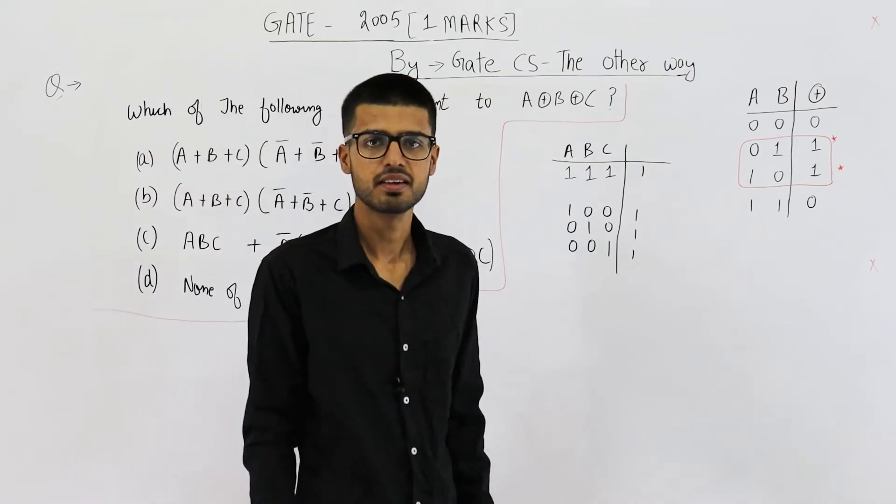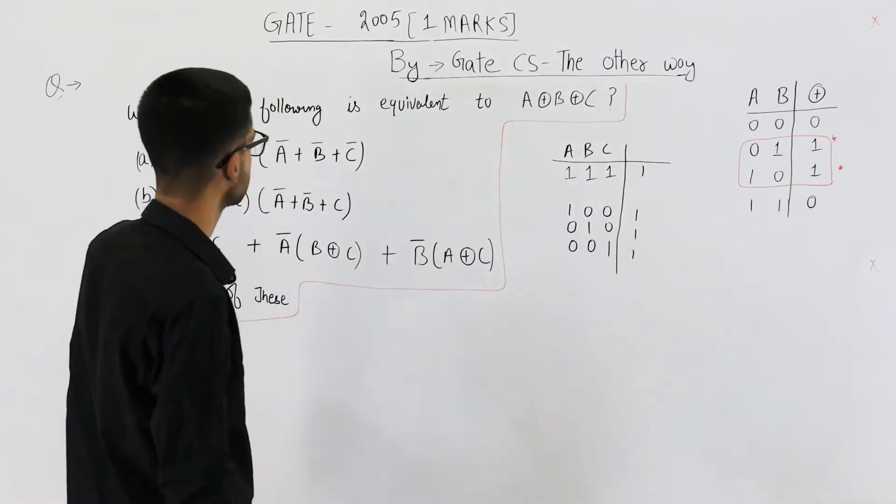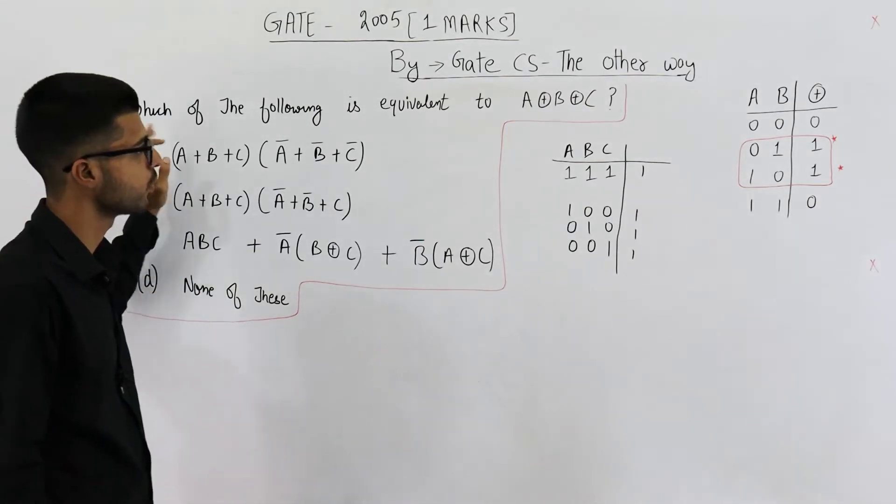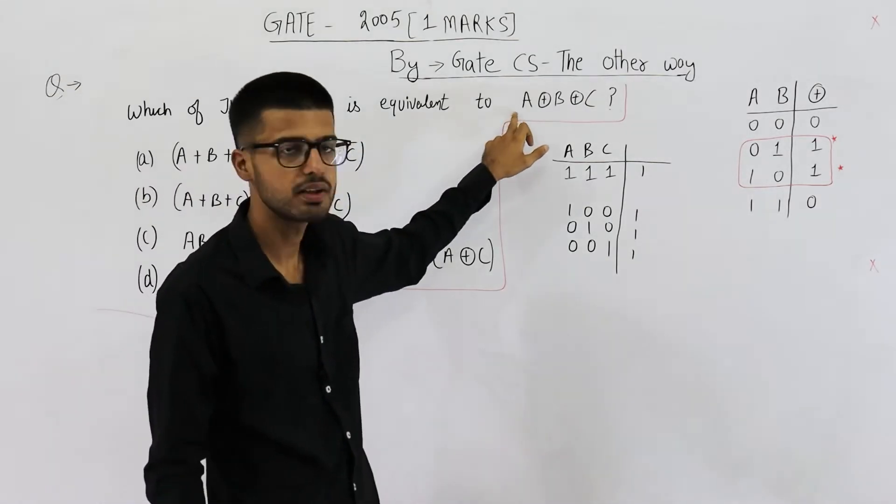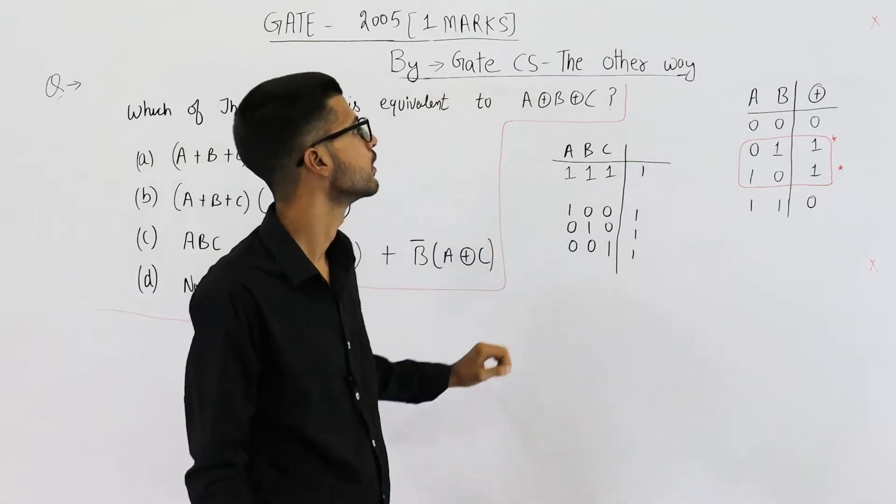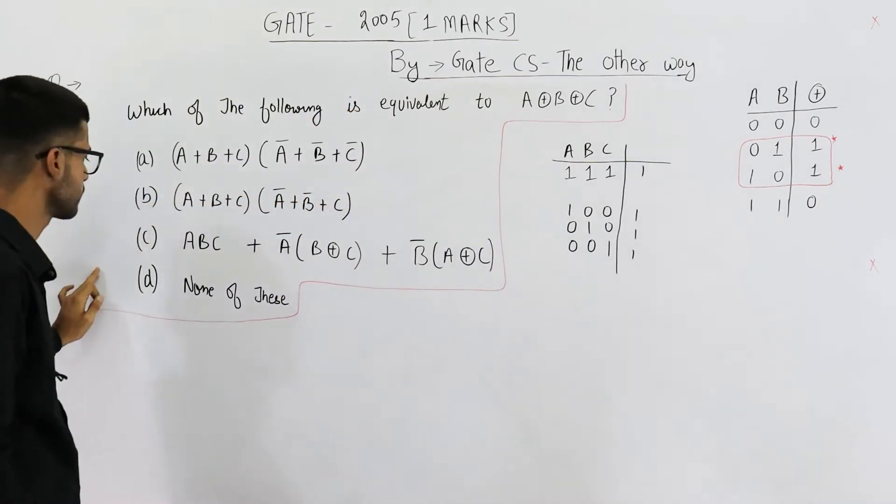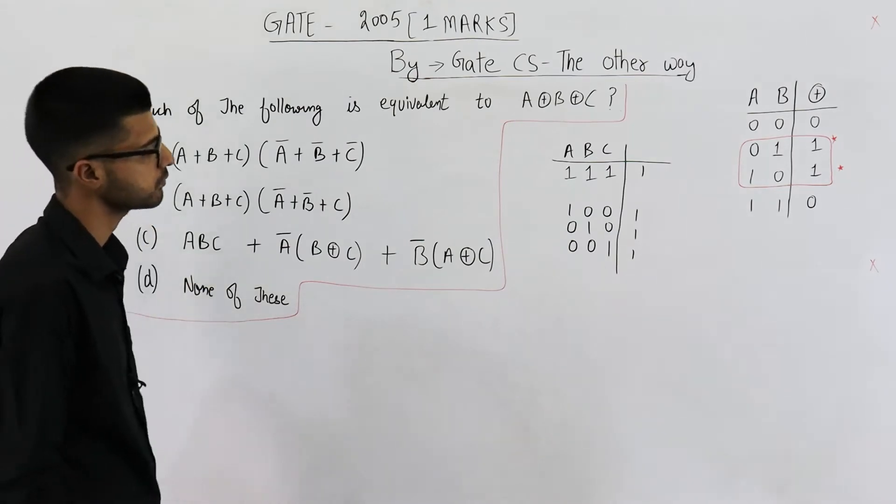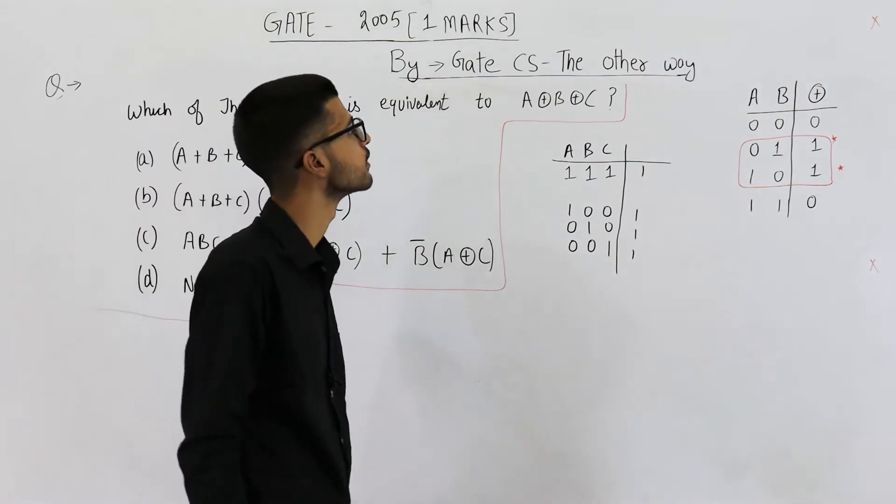Hello students, welcome back. This is a 2005 question for one mark. They are saying which of the following is equivalent to A XOR B XOR C. You have four options and you need to analyze only three. So let's see this.